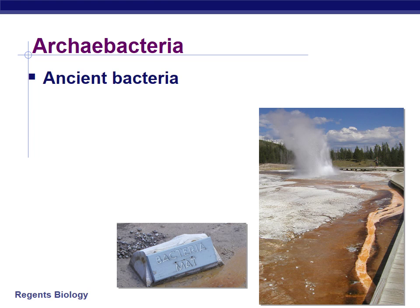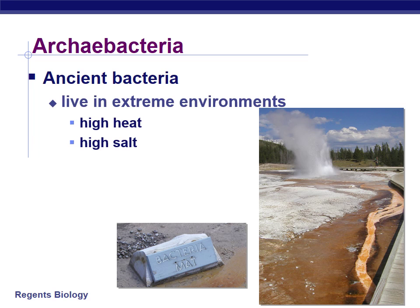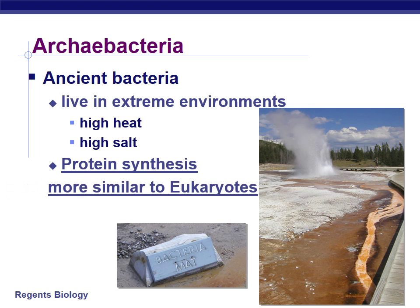The second kingdom discussed in this video is Archaeabacteria, in the domain Archaea. Archaea literally means ancient, so these are ancient bacteria. They live in extreme environments and are known as extremophiles — very high heat conditions, very high salt conditions. They are extremely similar to bacteria, which is why they're called Archaeabacteria. Archaea are prokaryotic and unicellular. They do have a cell wall. Some Archaea can move and some cannot, so both types of locomotion exist. Just like bacteria, some are autotrophic and make their own food, while some are heterotrophic and consume others.